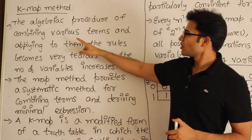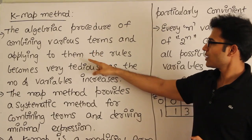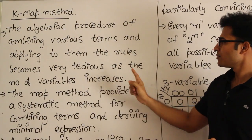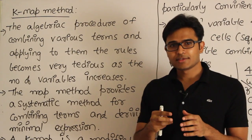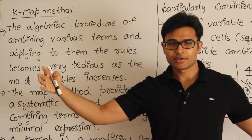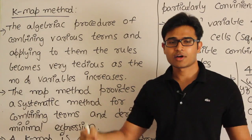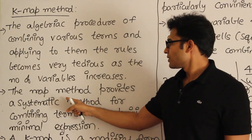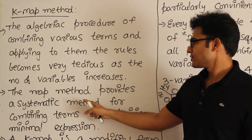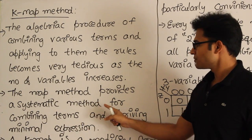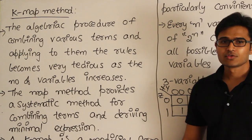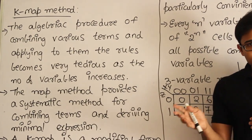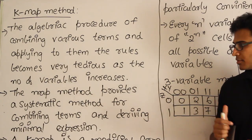The algebraic procedure of combining various terms and applying rules becomes very tedious as the number of variables increases — which means as the size of the expression becomes very large, the algebraic method obviously becomes very, very tedious. The map method provides a systematic method for combining the terms and deriving the minimal expression. The map is actually designed in such a way that it lends itself readily for simplification.